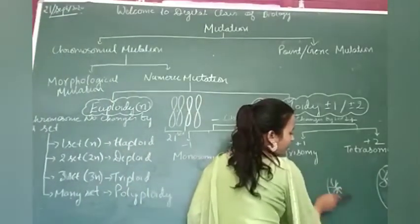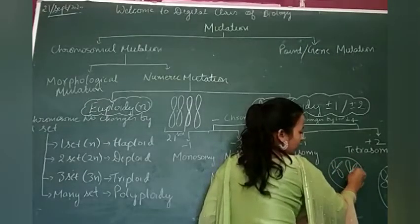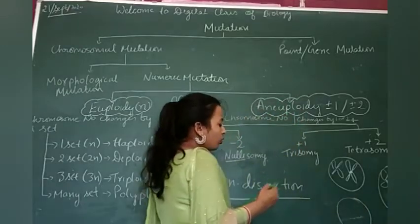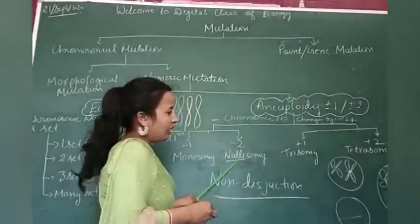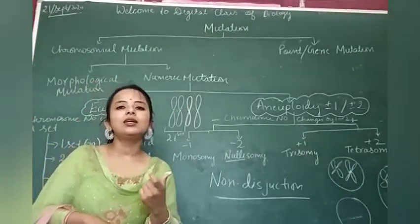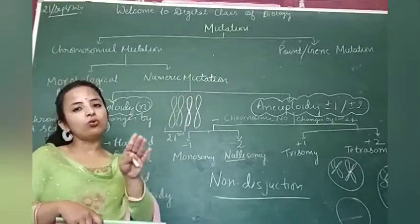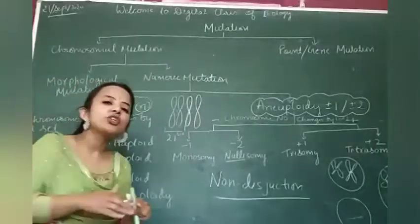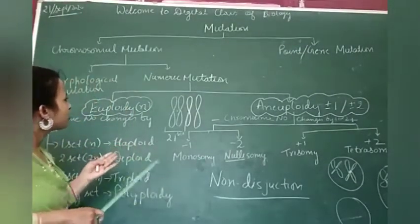As a result of this, what would happen? When the trisomy is formed, one would have this and one would have nothing. So your daughter cells would suffer from trisomy and nullisomy. I just want to explain you that in genetics, we need each and every chromosome and genes in a balanced amount. Neither too high nor too low, because its excess also leads to many diseases and its deficiency also leads to many diseases.